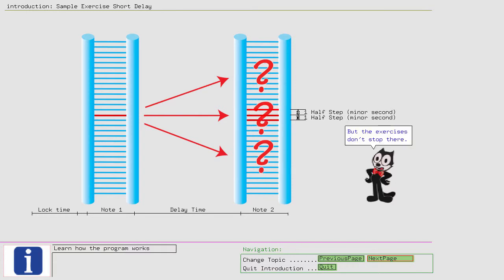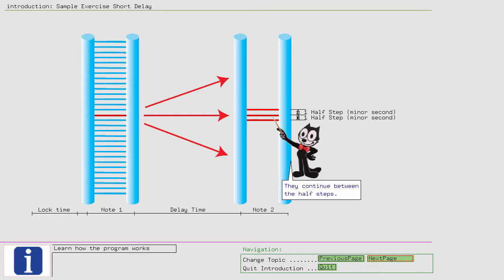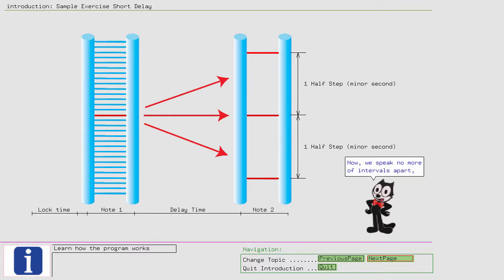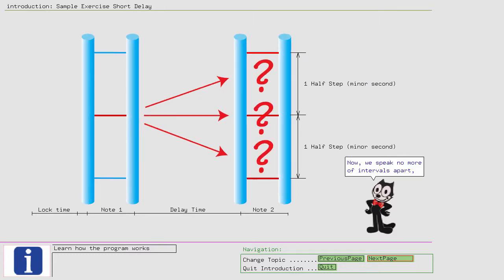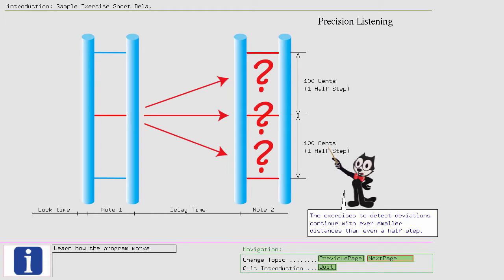But the exercises don't stop there. They continue between the half steps. So let's spread out the half step a bit more. Now we speak no more of intervals apart, but the deviations of pitches in cents. Here is where the precision listening starts. The exercises to detect deviations continue with ever smaller distances than even a half step.